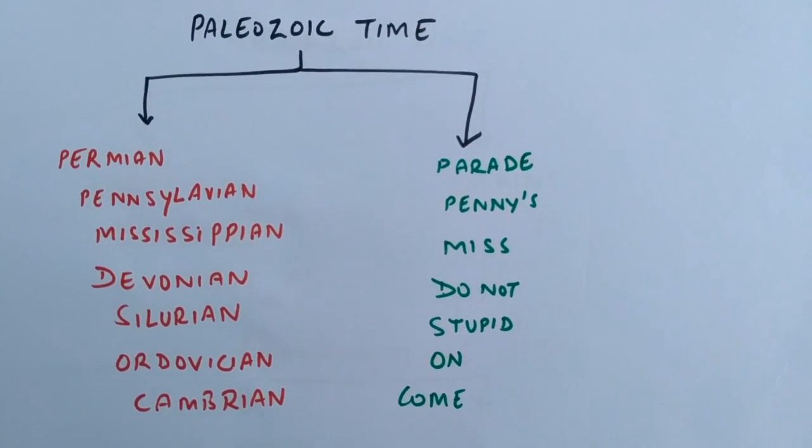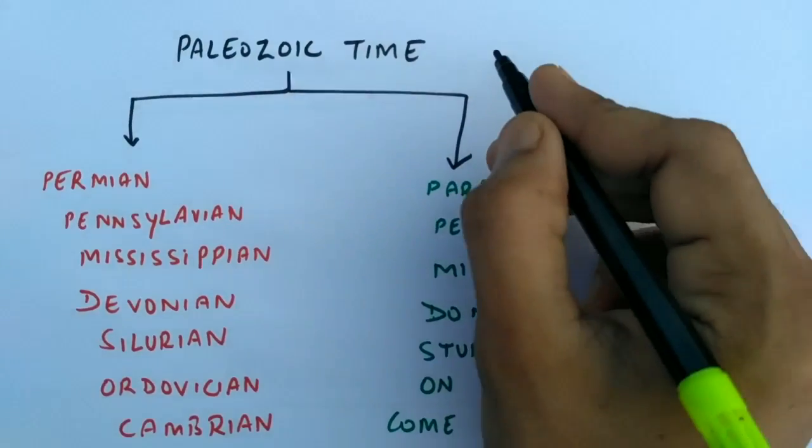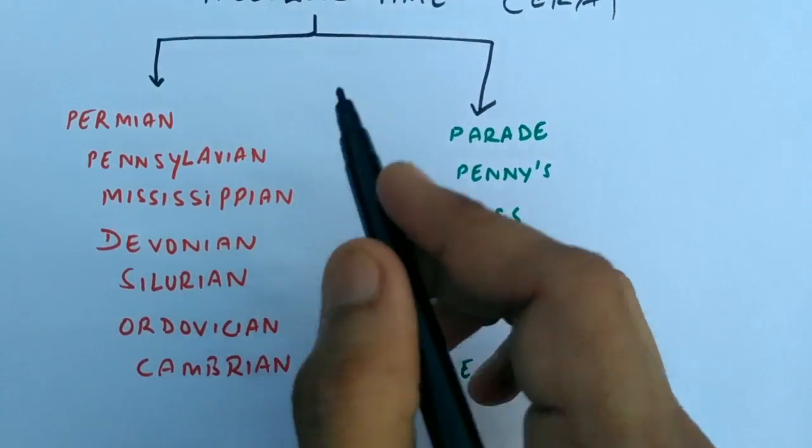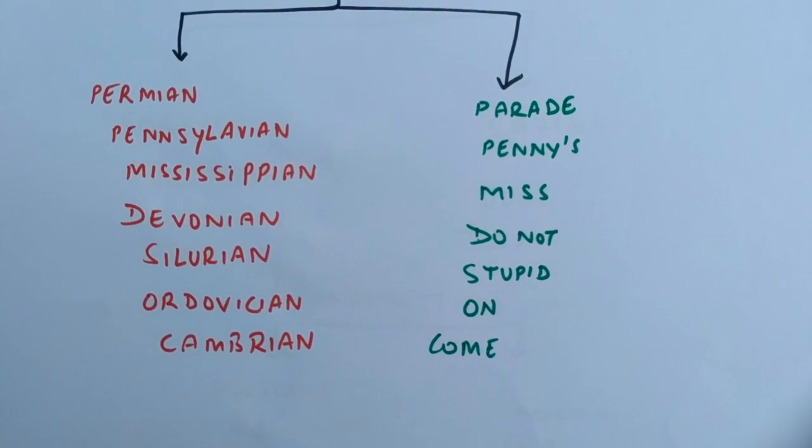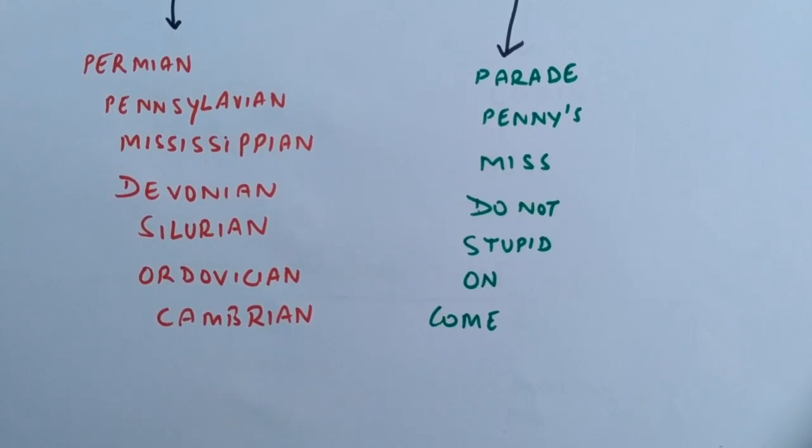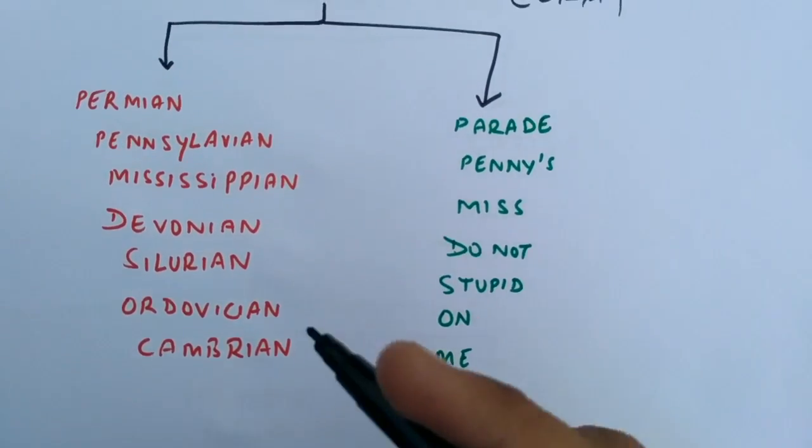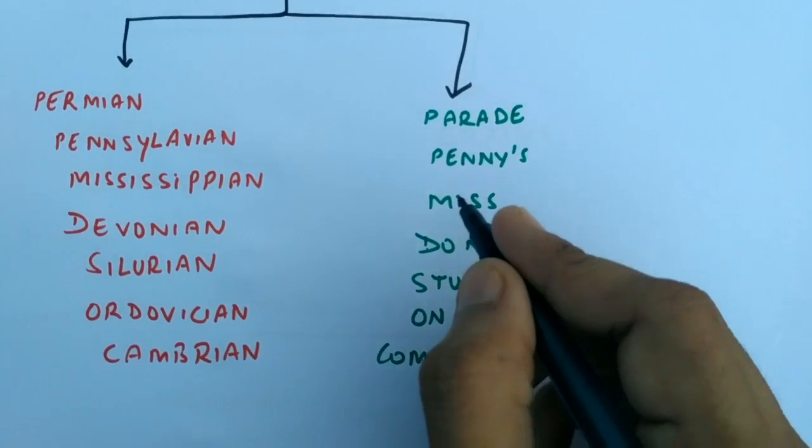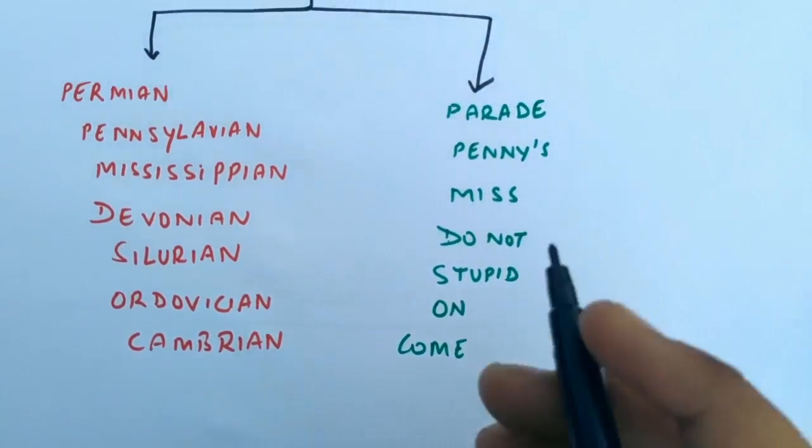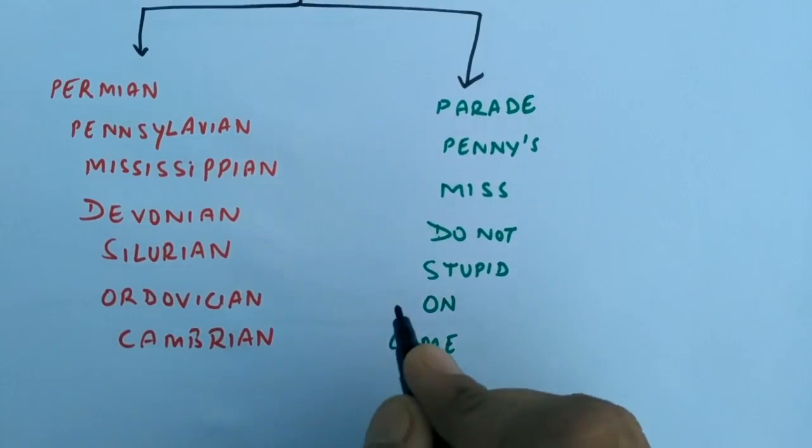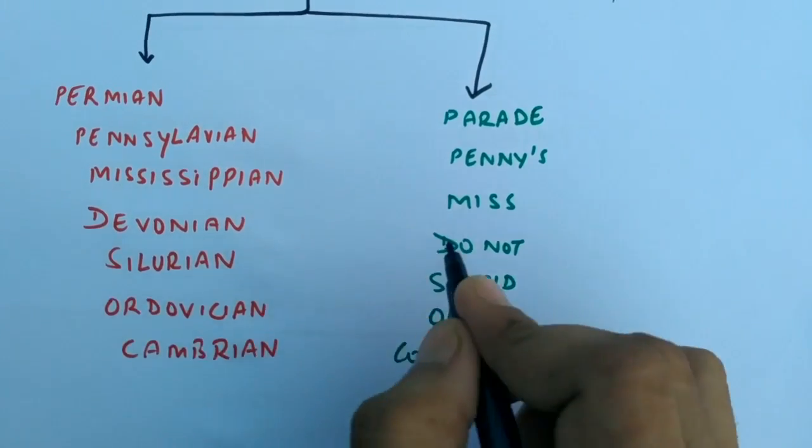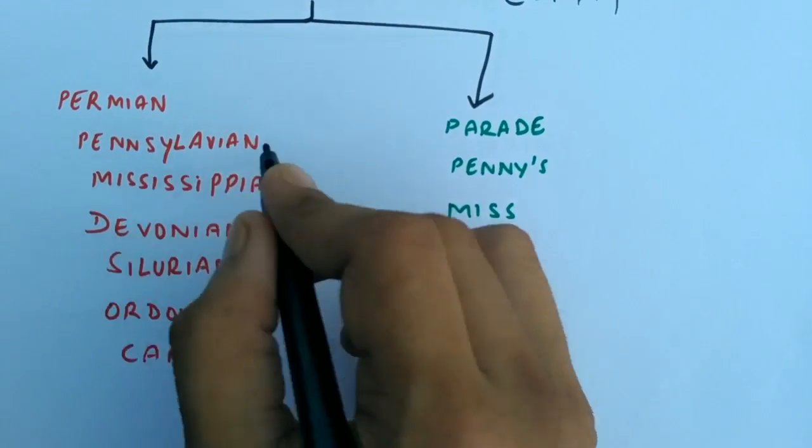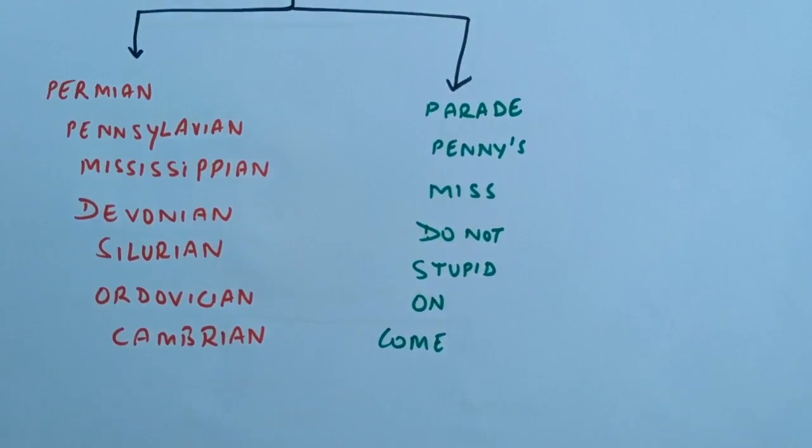Next, I am providing you some tricks to remember eras and periods. Firstly, Paleozoic era: the periods are Permian, Pennsylvanian, Mississippian, Devonian, Silurian, Ordovician, and Cambrian. Starting from Cambrian up to Permian, there is one rhyme: Come on, stop it, don't miss Penny's parade. Cambrian, Ordovician - on, Silurian - stop it, Devonian - do not, Mississippian - miss, Pennsylvanian - Penny's, Permian - parade.